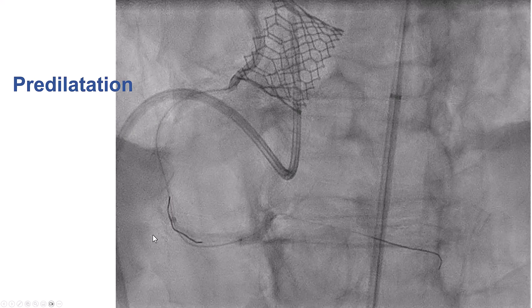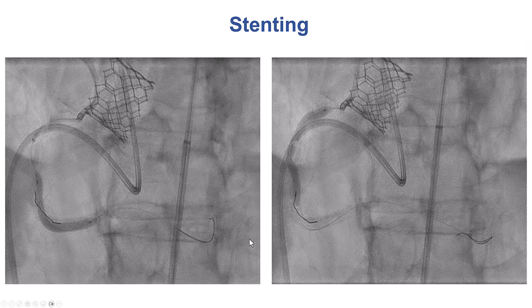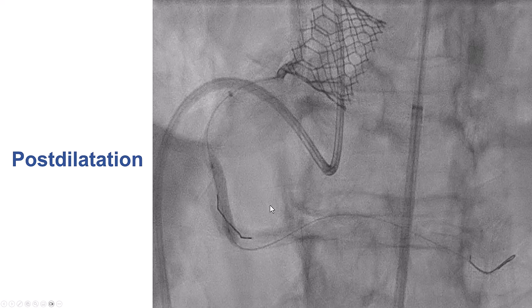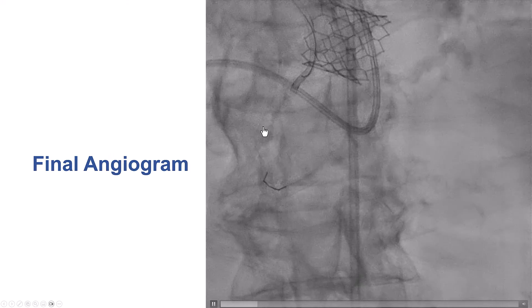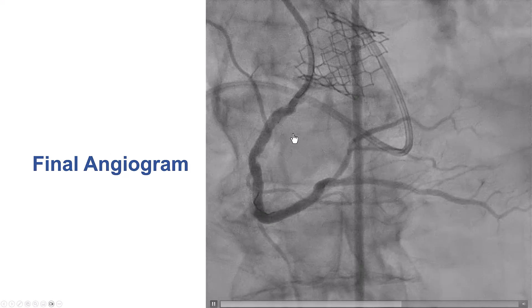We had spent quite some time, and the traditional thinking is that one should not spend too much time due to contrast and radiation exposure. The simplest approach is to cover the wire fragment with a stent. So we decided to move in that direction — we left the wire alone, predilated the area where we had performed orbital atherectomy, confirmed the balloon was expanding, predilated the entire RCA, and then placed stents from the distal to the proximal right coronary artery.